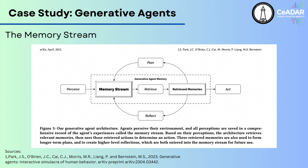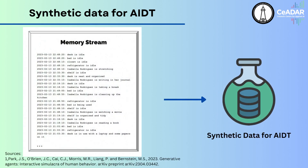For instance, if an agent remembers having a positive interaction with another agent, it may decide to approach that agent for conversation in the future. Conversely, if an agent remembers having a negative interaction, it may decide to avoid that agent in the future. This ability to learn from past experience and adjust future behavior accordingly is a key feature of the generative agent architecture. The sandbox environment provides a fascinating example of how we can simulate human behavior to generate synthetic data.